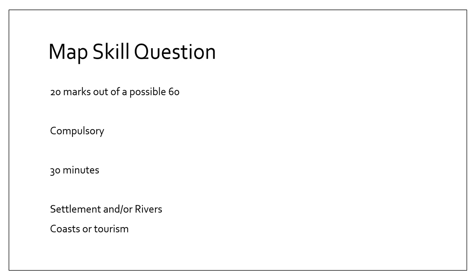So why the Map Skills question? They always come up as part of the Cambridge IGCSE Geography exam for Paper 2. They are worth 20 marks out of a possible 60, they are compulsory, and I would advise you spend about 30 minutes doing this section. Although they're usually on settlement and rivers, they also take inspiration from coasts and tourism. The skills asked for in Map Skills are transferable to other exam papers — if you can master those skills, you're in a good shot of getting a very good proportion of the marks.